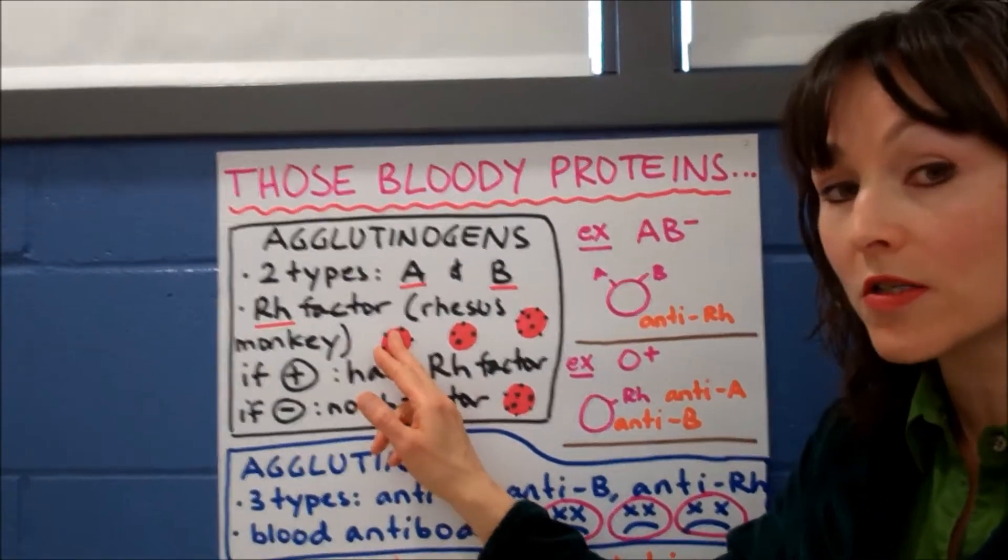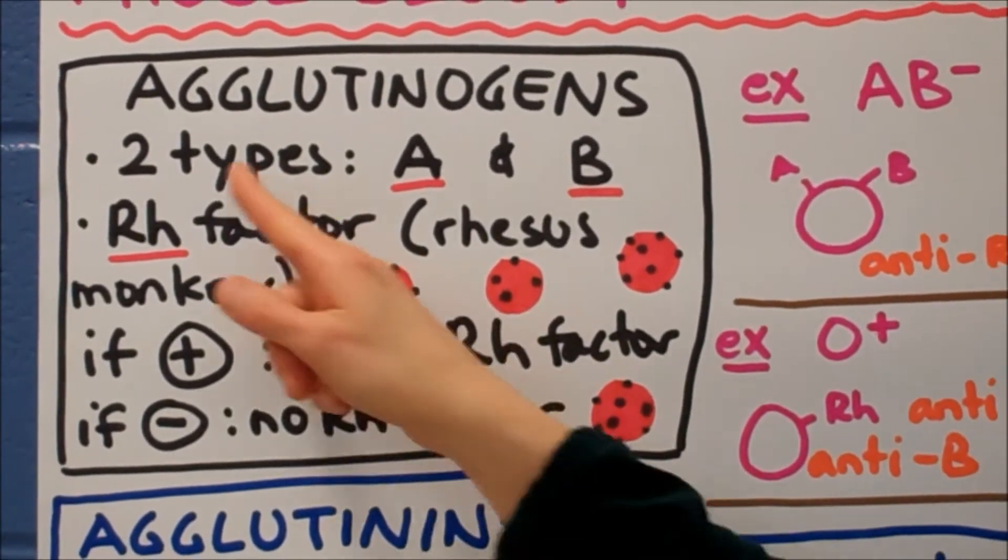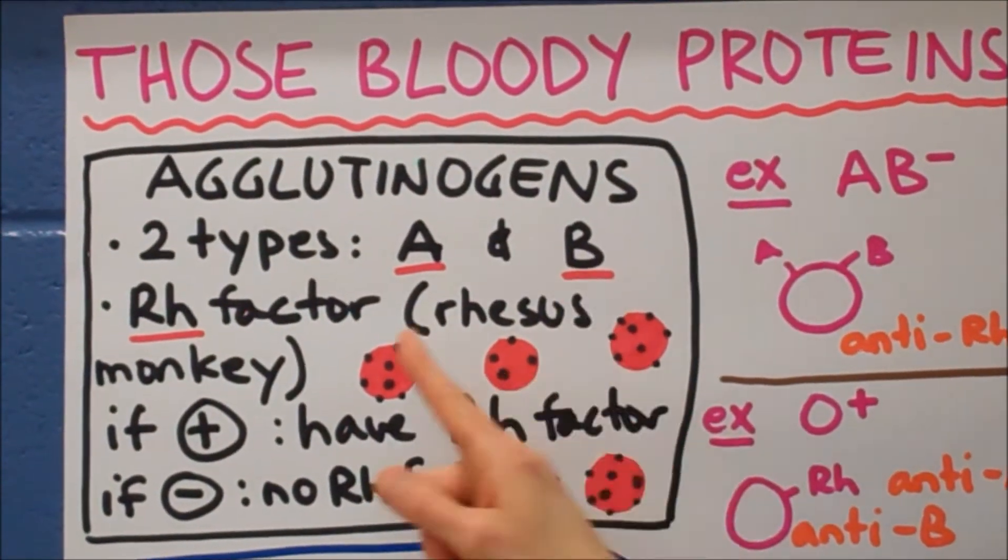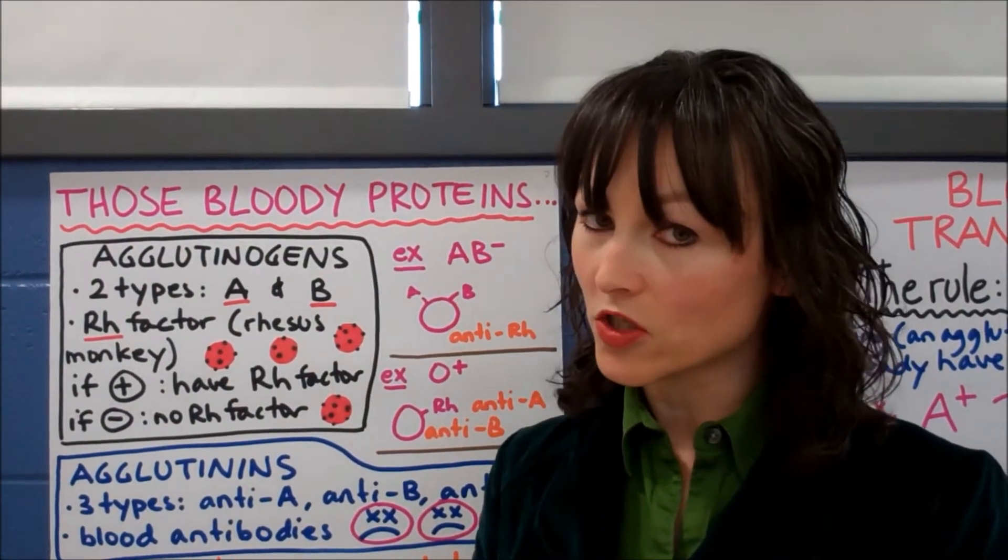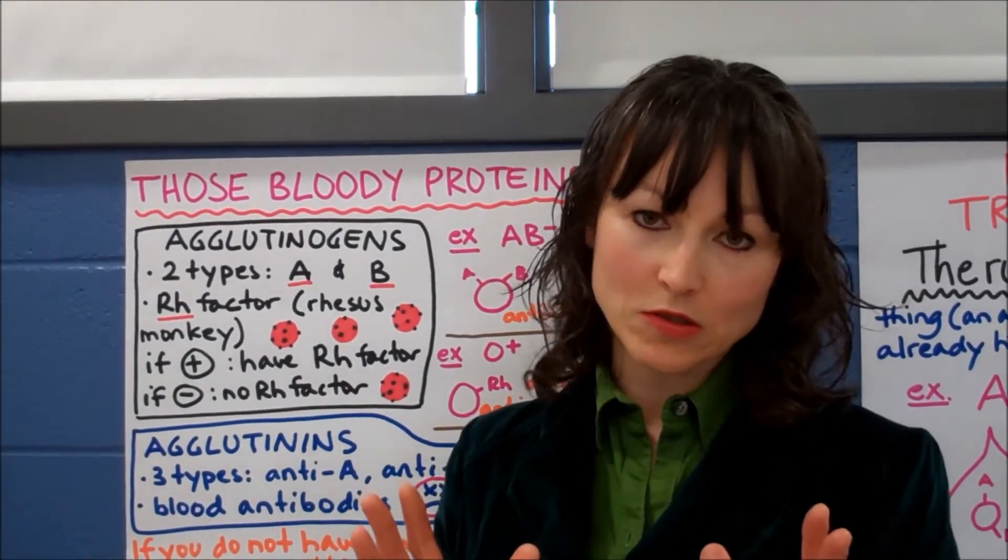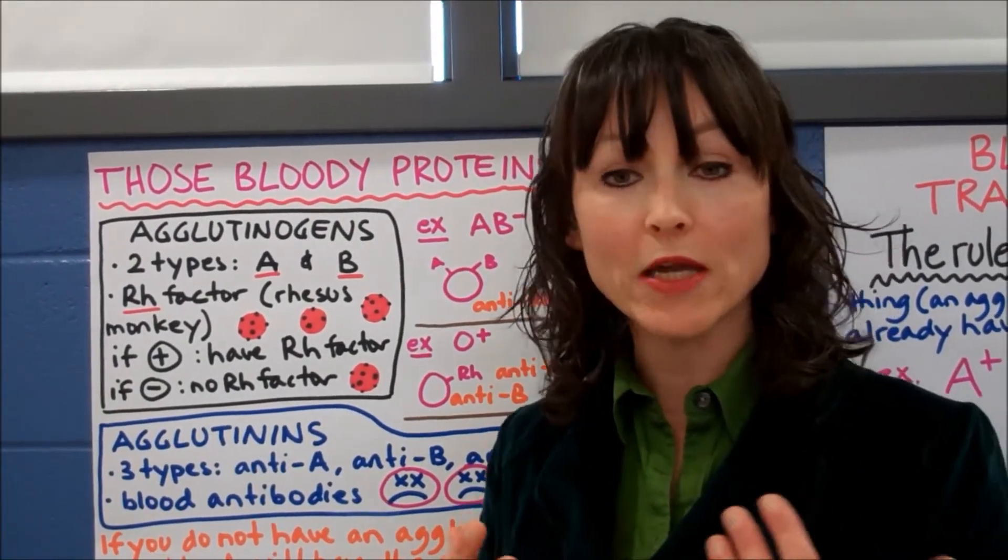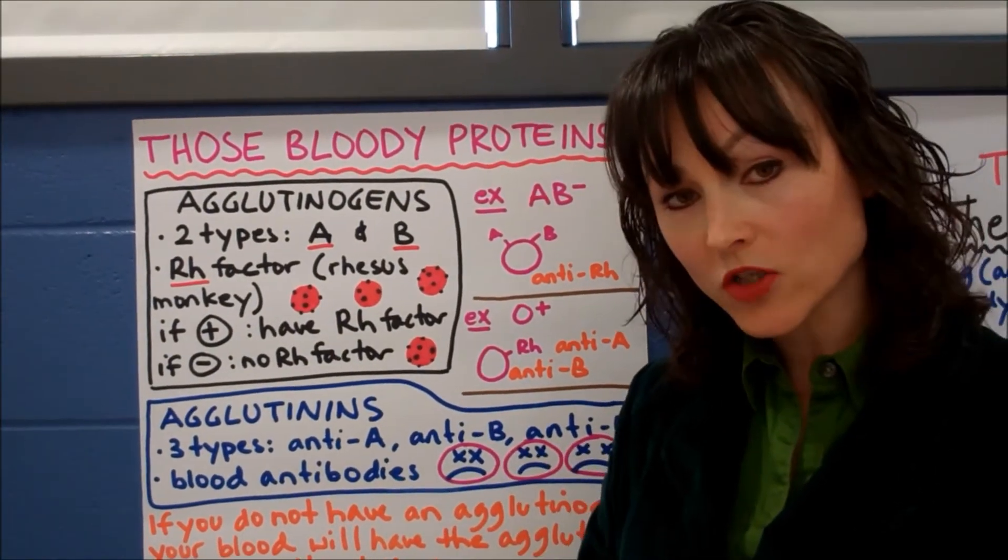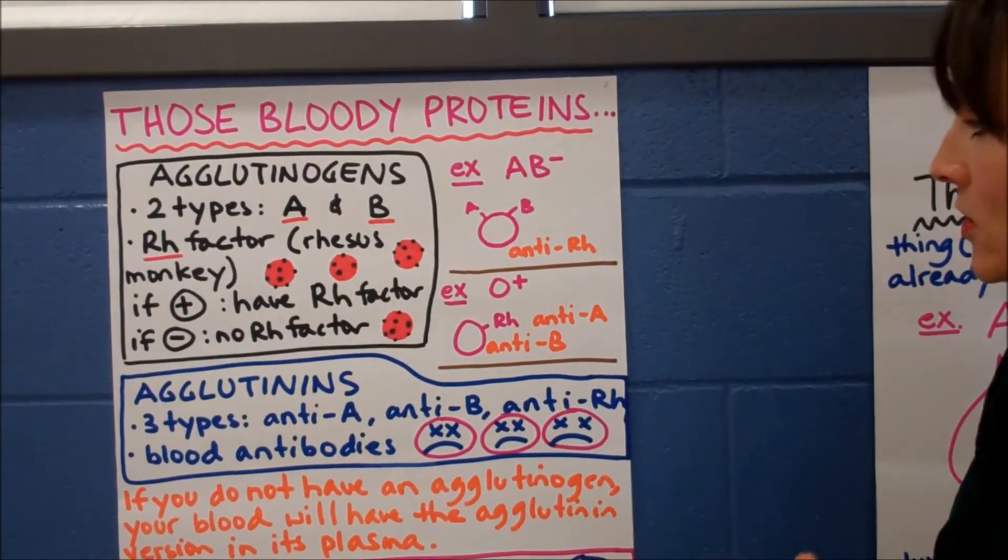So agglutinogens, you can picture little dots on the membrane of the red blood cell. And there are two types, but actually, there are three types. Let me tell you why. You can have blood type A, so you can have agglutinogen A. You can have agglutinogen B, or you can have the Rh factor. If you have the Rh factor, you are positive. Your blood will be positive. If you don't have the Rh factor, your blood will be negative. The Rh factor is called Rh in honor of the rhesus monkey, which is the cutest little monkey. It has this factor too, because primates share factors in their blood and in their DNA and their makeup. And so in honor of this monkey, we've called it the Rh factor. So if you have the A and the Rh factor, you are blood type A-plus. If you only have the A, you would be A-.